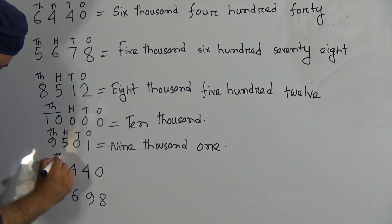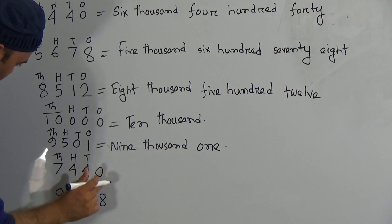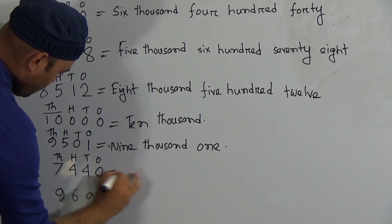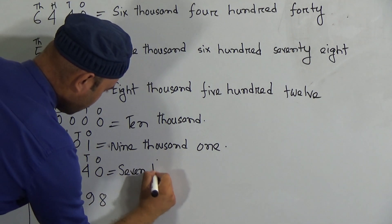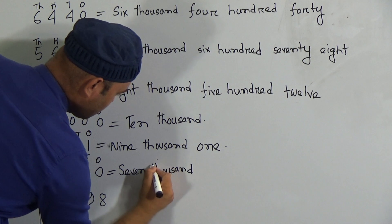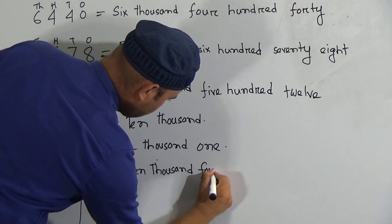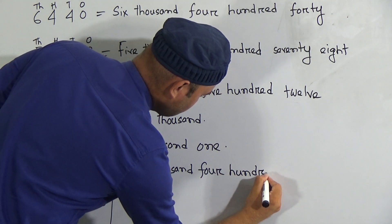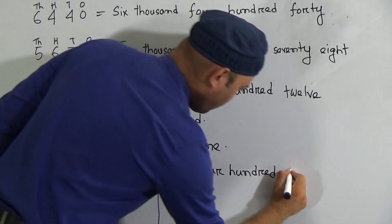The next number: 7 is in the thousand place, 4 is in the hundred place, 4 is in the tens place — meaning forty — and the ones place gives the final digit. So in words this is seven thousand four hundred forty.